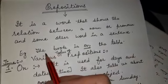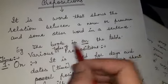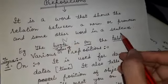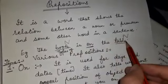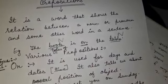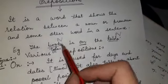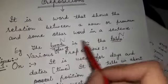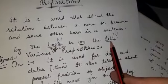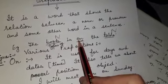Let's take an example. The book is on the table. There are two nouns in this sentence: book and table. In douno ka relation hume batata hai — ki jo book ke hai, uske position table pe kahan hai? That is on the table. Ek noun ka dousre noun ke saath relation batata hai. Book kahan pe padi hai? Table ke upar. On means upar.